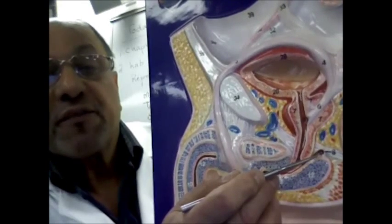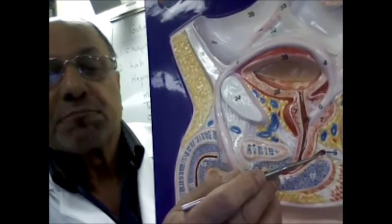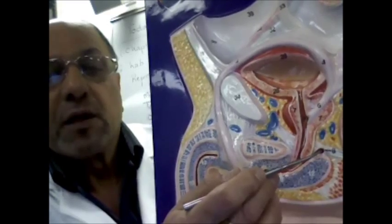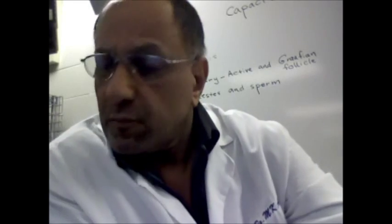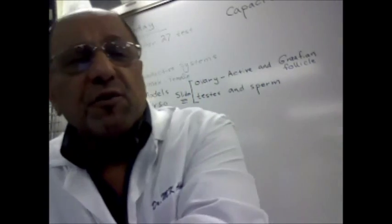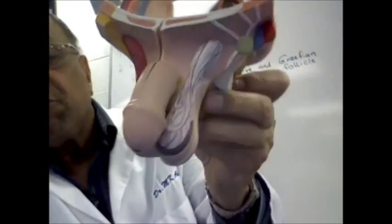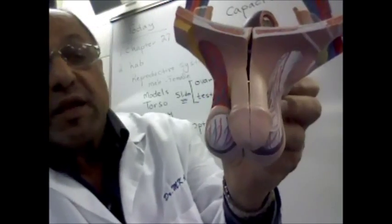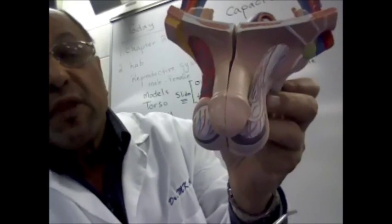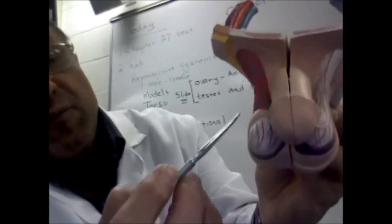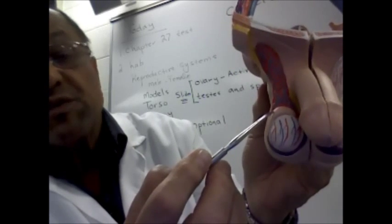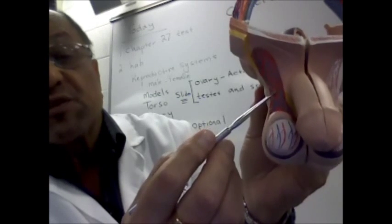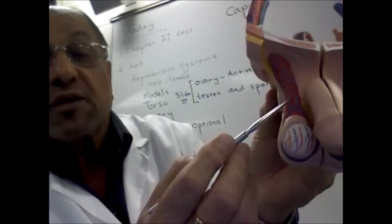We're going to also use part of the torso that shows the male reproductive system. We can see the two testes. On this side here we can see the epididymis and we can also see blood vessels associated with the ductus deferens.